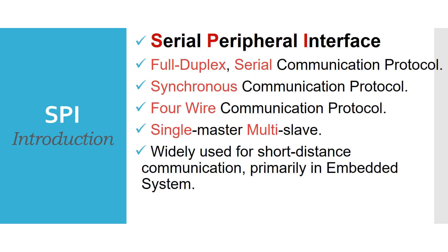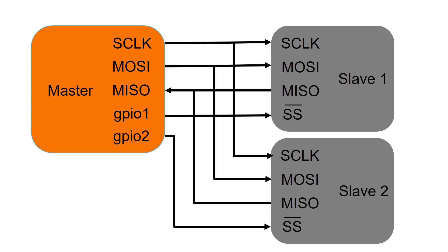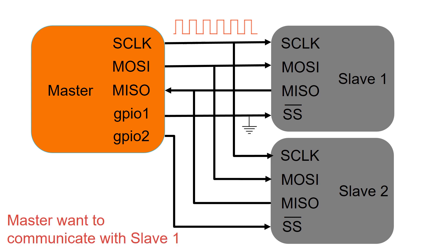These were the highlights from the previous video. SPI is a serial synchronous communication protocol which requires 4 wires. A SPI network can contain only one master node which can communicate with multiple slave nodes. To start communication, the bus master configures the clock signal using a frequency supported by the slave device. Then the master pulls the respective GPIO to 0 to select the particular slave device it wants to communicate with. To stop communication, the master stops toggling the clock signal and deselects the slave.